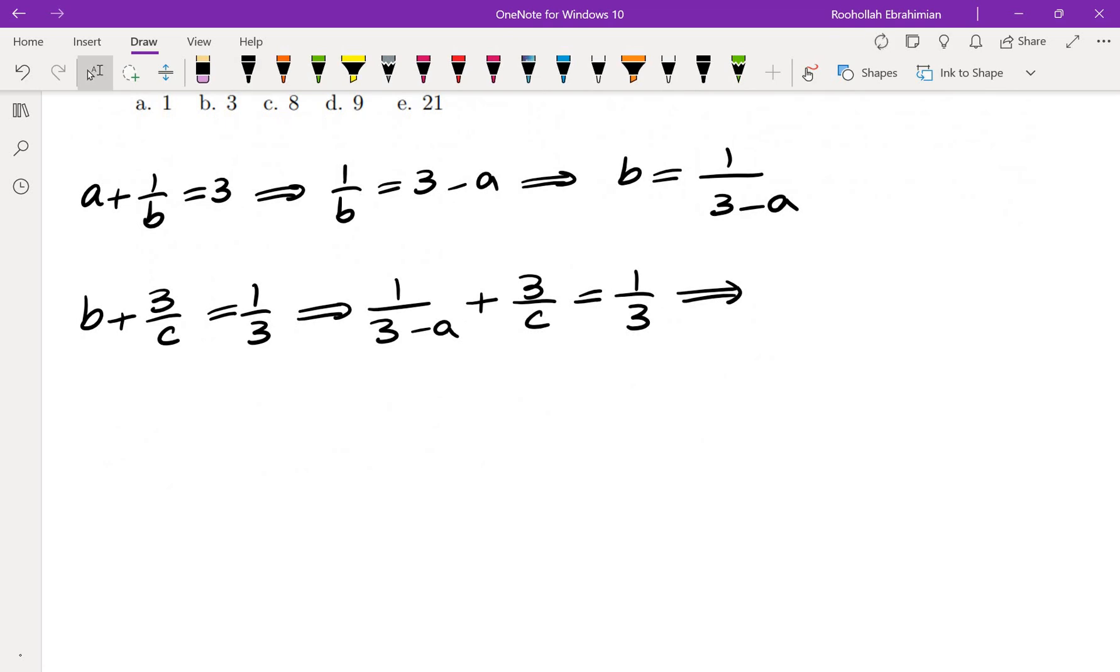Now we are going to clear the denominator. We're going to multiply by 3c times 3 minus a. We're going to get 3c here, 9 times 3 minus a, and the other side is going to be c times 3 minus a.